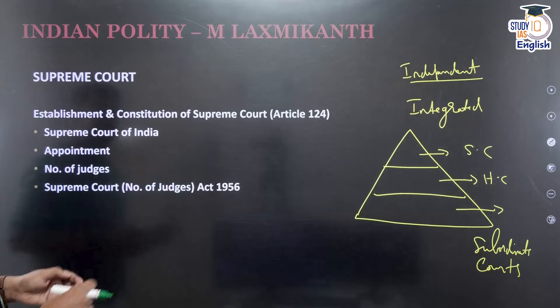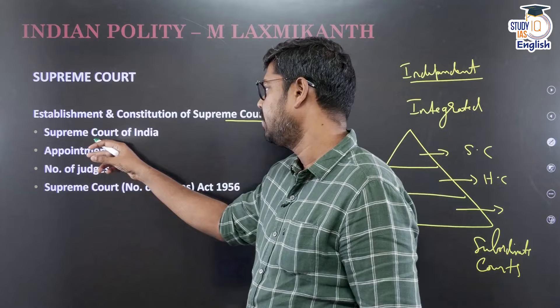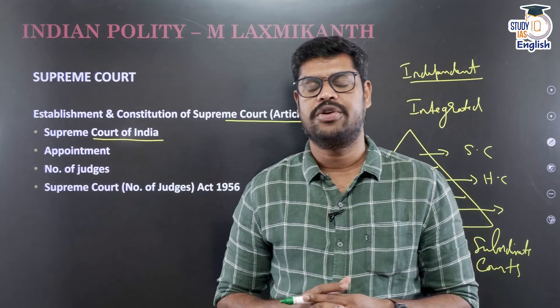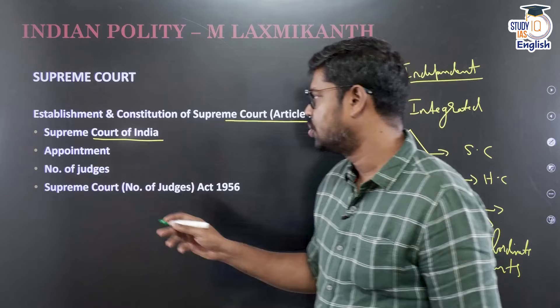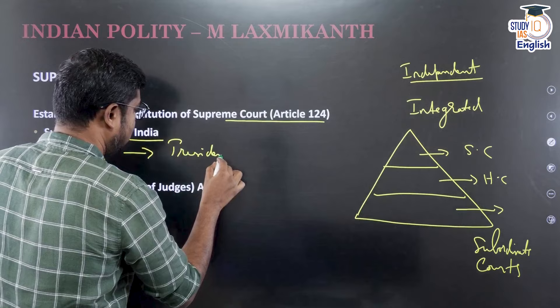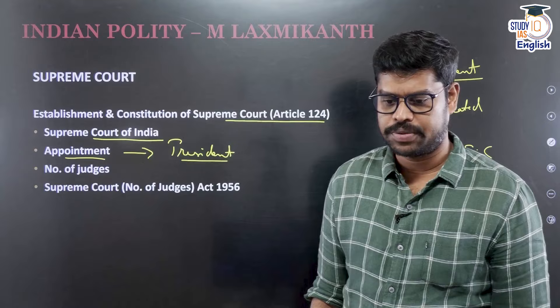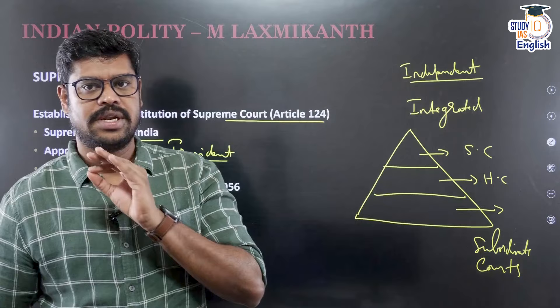Article 124 of the constitution says that the Supreme Court of India shall be the highest court in our country, and there shall be a seat of the Supreme Court in the National Capital Territory of Delhi — that is the principal bench. The constitution says the judges shall be appointed by the President of India. In the original constitution, the strength authorized was 7 plus 1 judges. The constituent assembly knew this strength might not be sufficient in future.